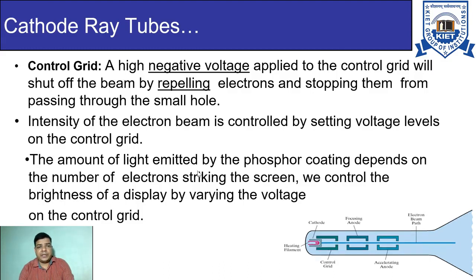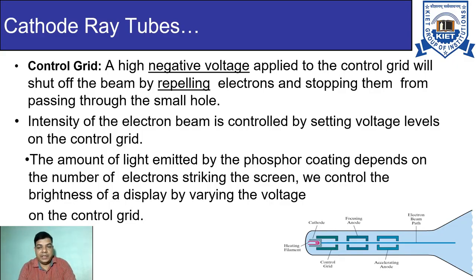The amount of light emitted by the phosphor coating depends on the number of electrons striking the screen. We control the brightness of a display by varying the voltage on the control grid. If you increase the voltage, at some point it will stop all the electrons.